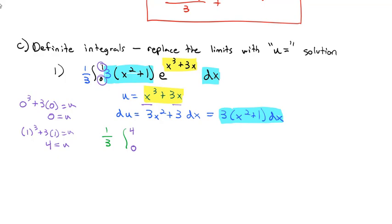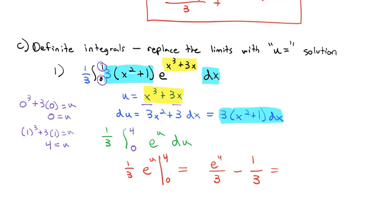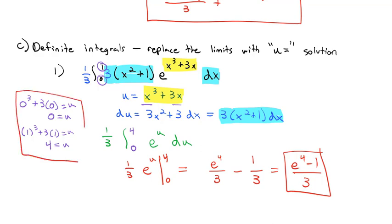With the new limits, the 3(x² + 1) dx all becomes du, leaving one-third times the integral from 0 to 4 of e^u du — the easiest integral to take. That gives one-third e^u evaluated from 0 to 4: e⁴/3 minus e⁰/3, which equals (e⁴ − 1)/3. That is the area under the curve between 0 and 1. With definite integrals, we don't have to substitute back to x's — we just work with the u's.